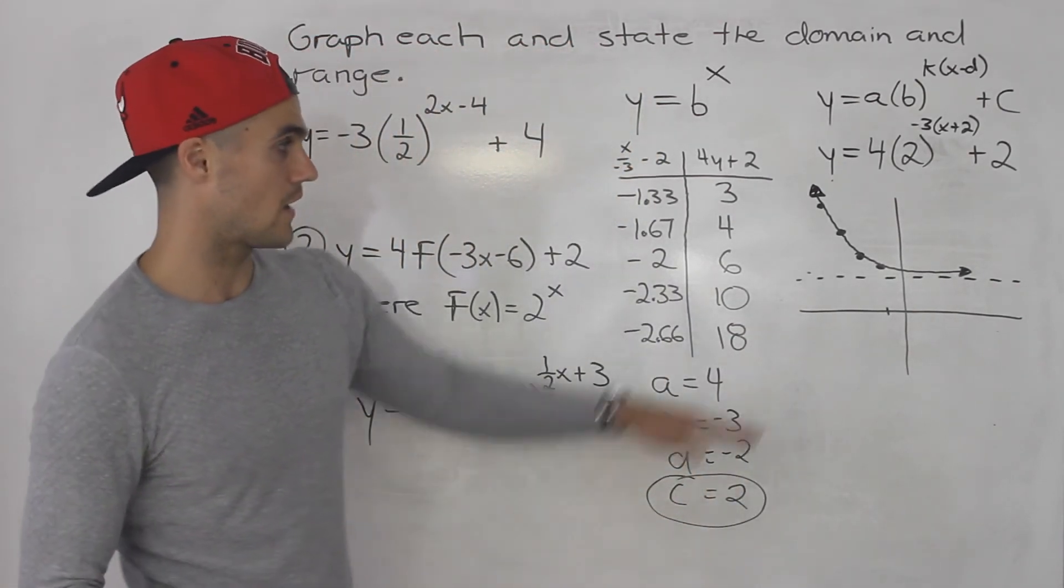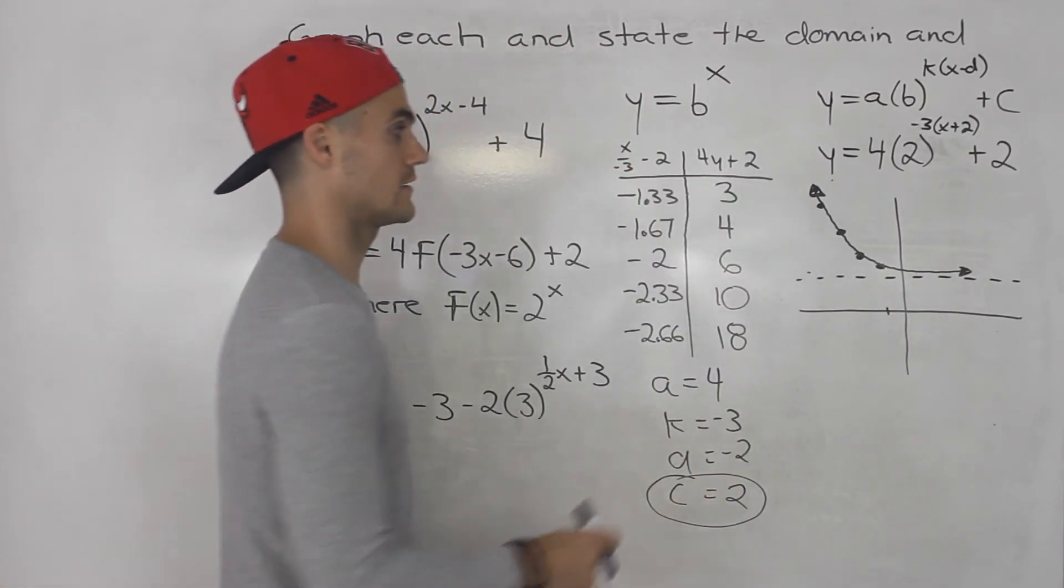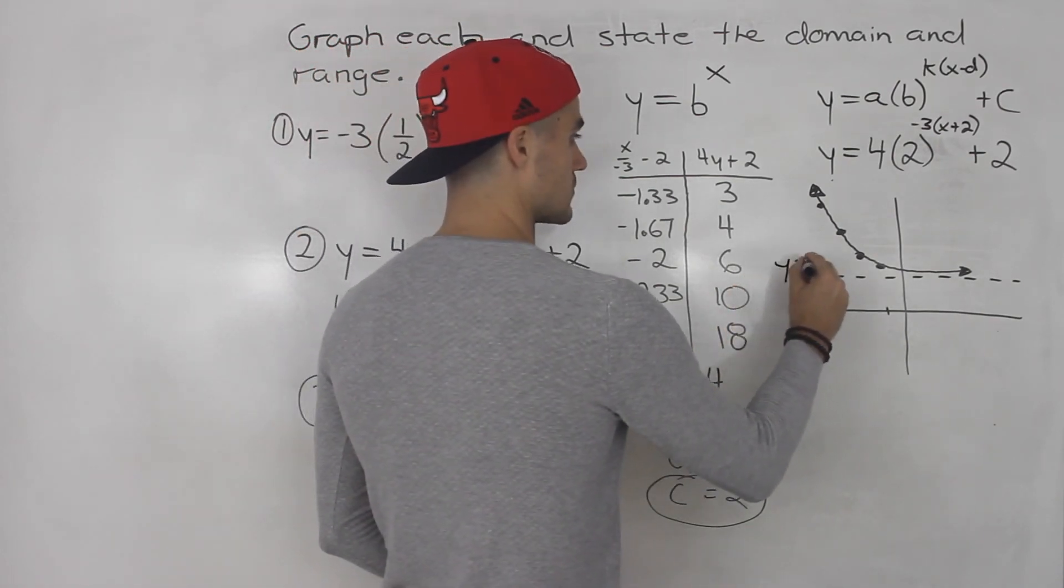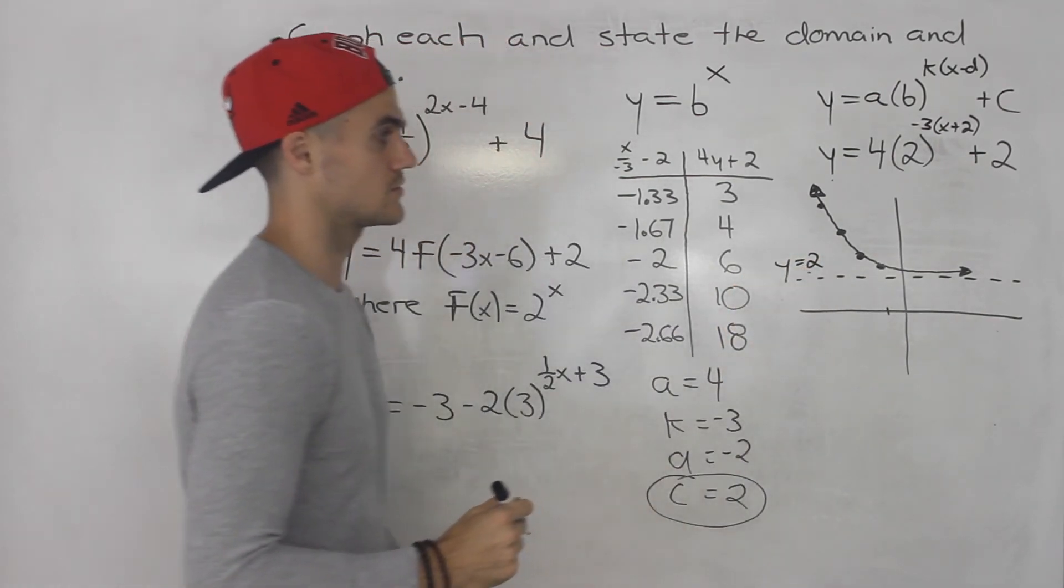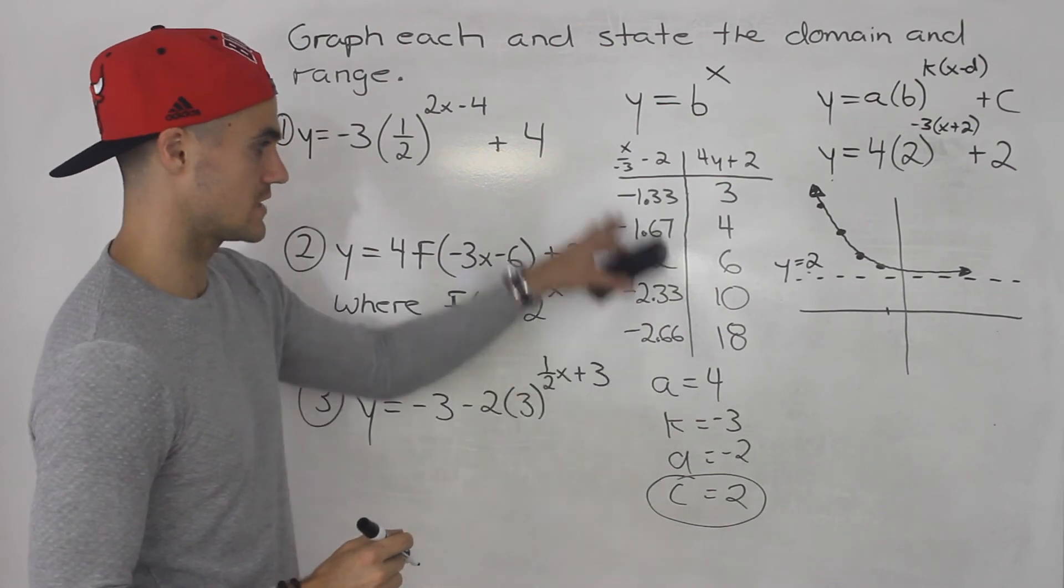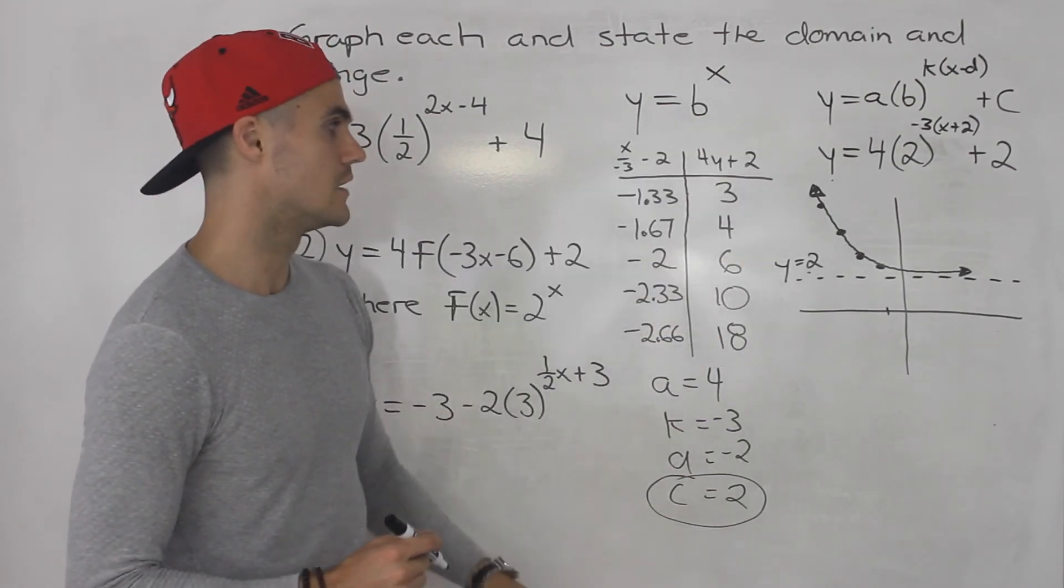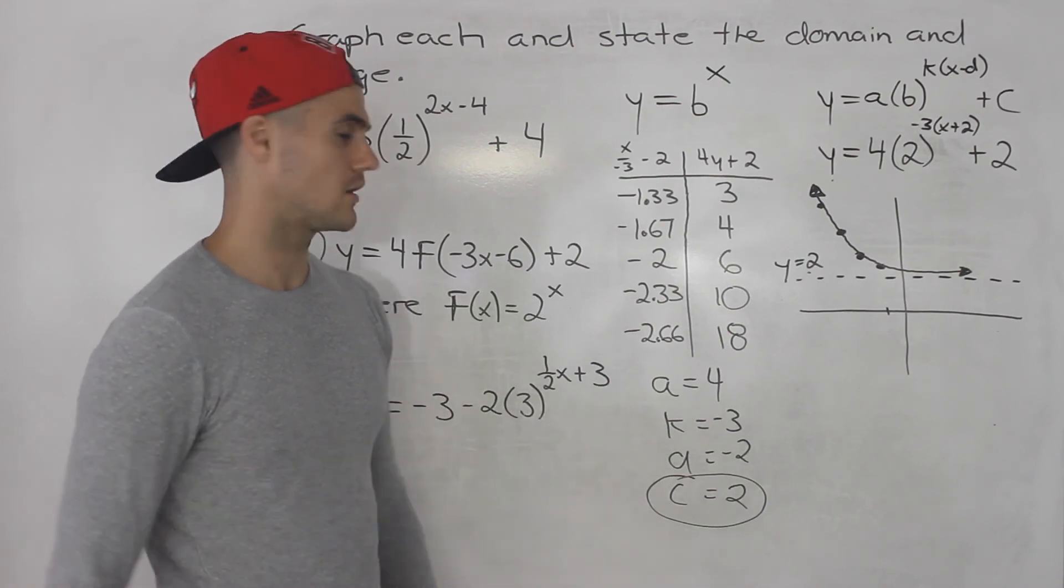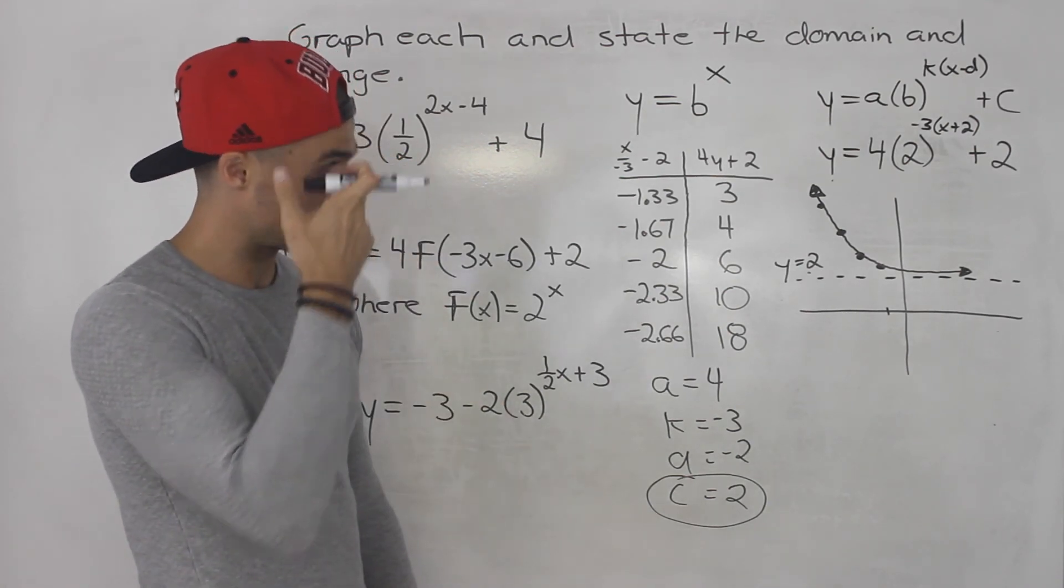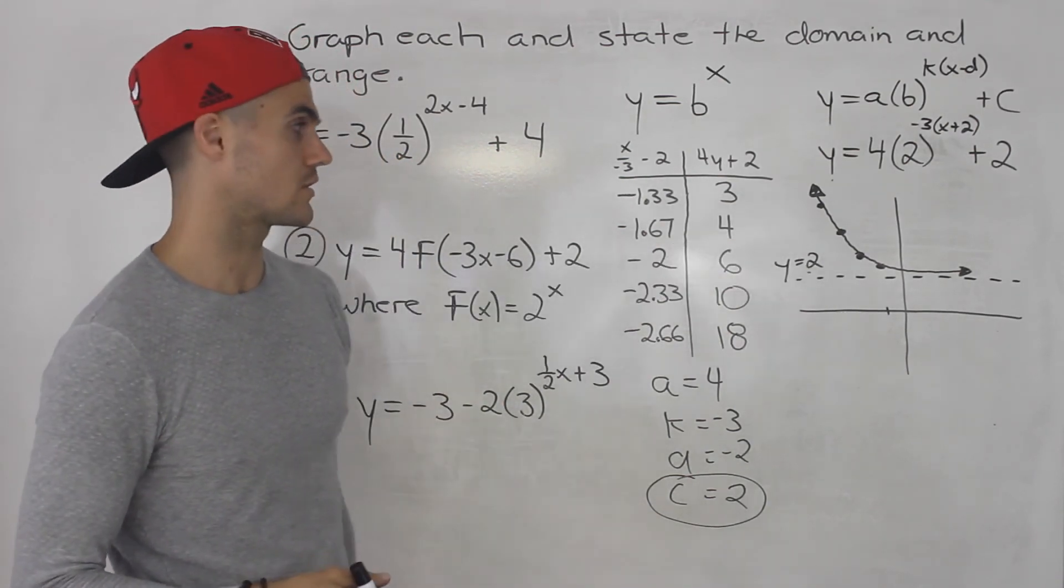Right so in this case all of the y values are above that horizontal asymptote of y is equal to 2. All right so taking these points plotting them I didn't plot the last point because it would be way above, but if you graph it on graph paper make it to scale you should get that sort of shape.